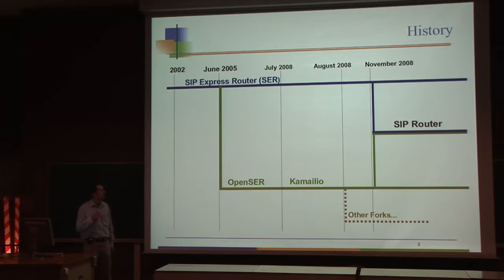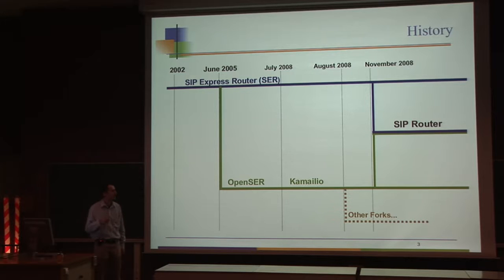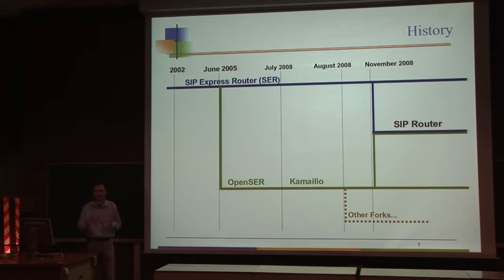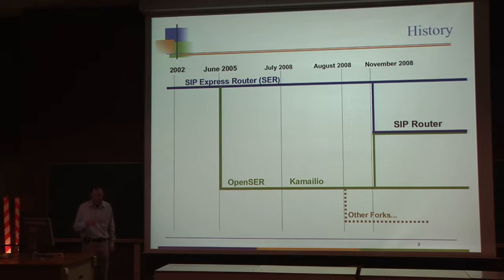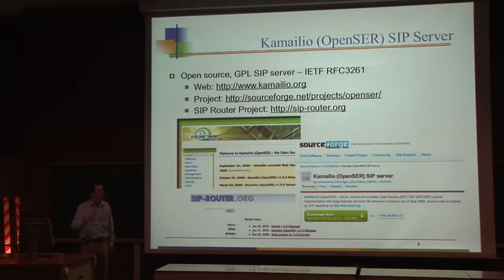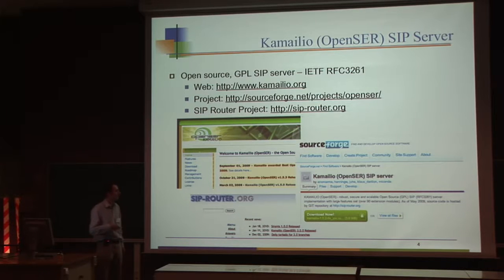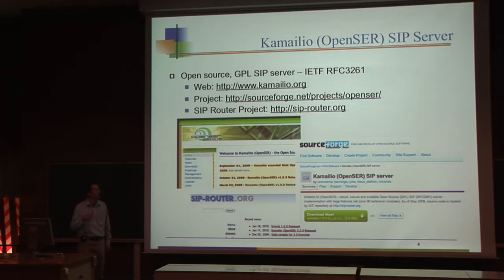Although we started a branch in 2005, we are now working again with the original team under the so-called SIP Router project starting in 2008, because we discovered that we can share a lot of knowledge and efforts mainly in the SIP area, while we keep our own direction mainly related to user provisioning and architecting of backends as extensions. Kamailio.org and SIPRouter.org are the respective websites.